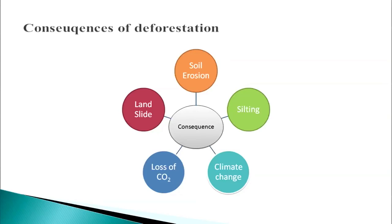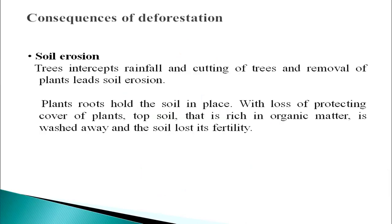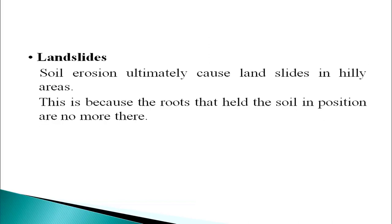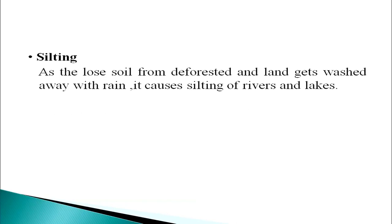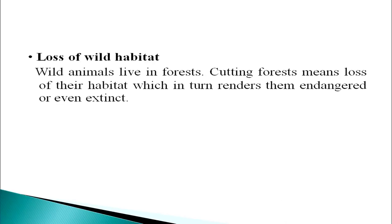There are several consequences of deforestation: soil erosion, silting, climate change, loss of carbon dioxide sink, and landslides. Trees intercept rainfall, and cutting of trees and removal of plants leads to soil erosion. Plant roots hold the soil in place; with loss of this protective cover, the top soil rich in organic matter is washed away and the soil loses its fertility. Soil erosion ultimately causes landslides in hilly areas because the roots that held the soil in position are no longer there. As loose soil from deforested land gets washed away with rain, it causes silting of rivers and lakes. Wild animals live in forests, so cutting forests means loss of their habitat, rendering them endangered or even extinct.